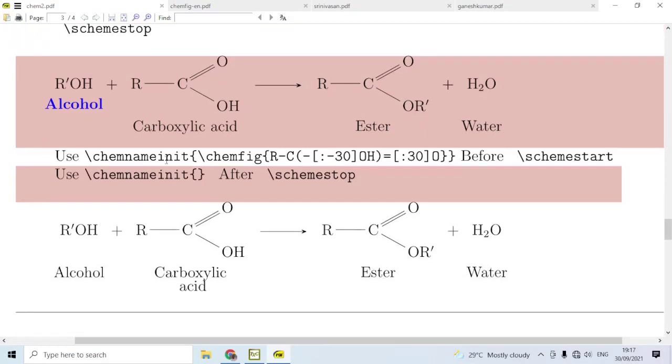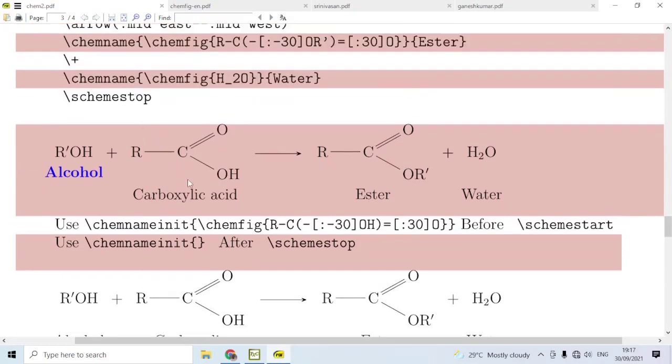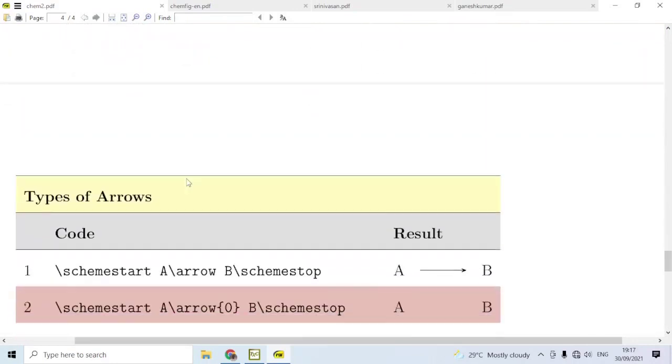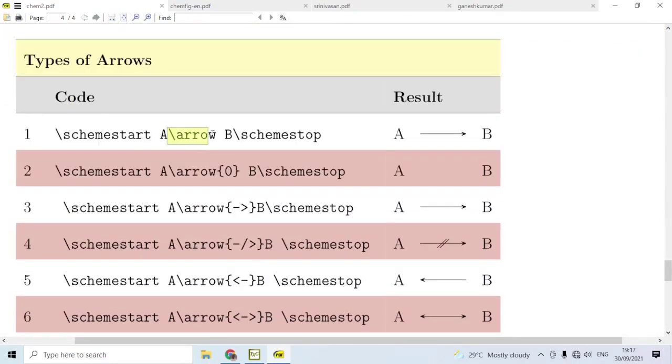Now, we have referred to the arrow here. What are the types of arrows possible here? If you simply say arrow, then you get a long right arrow like this. If you use arrow within curly braces 0, you have an invisible arrow. If you use arrow hyphen greater than, you get this long right arrow. Notice that what is given in line 3 and line 1 produce the same output.